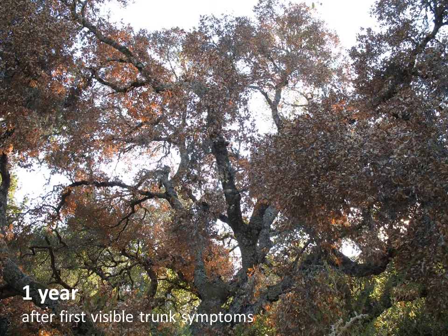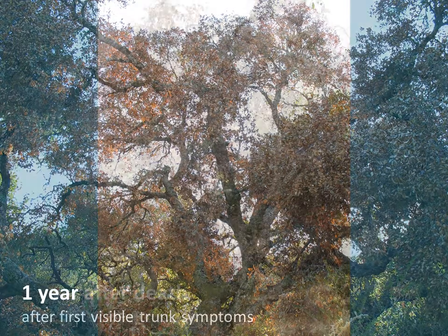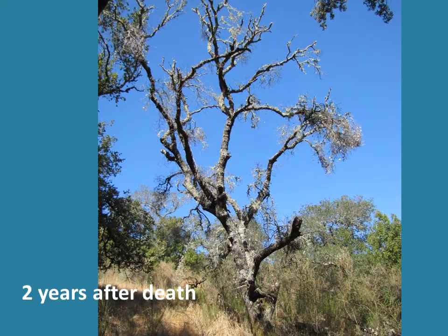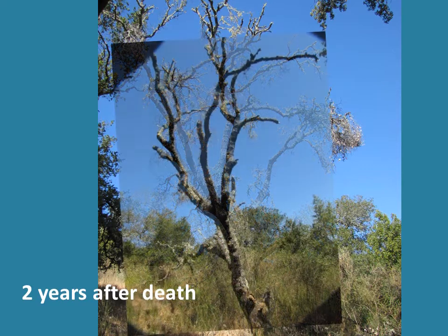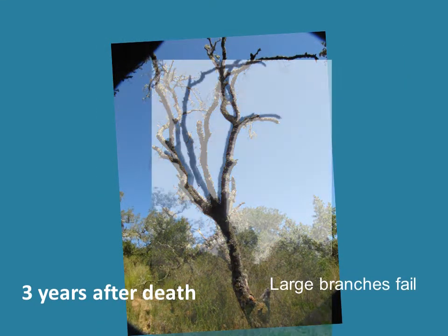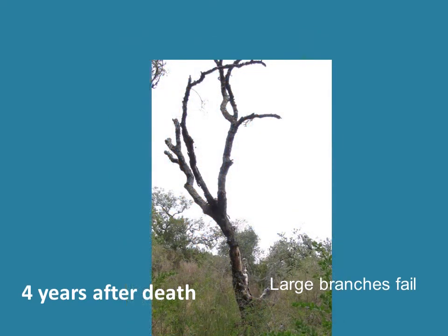A year later, this large tree was dead — a classic example of sudden oak death. As is typical of trees that die suddenly, the dead leaves fall off over the next year or two. Within two years of death, many of the fine branches and some of the larger branches had failed. This pattern of falling apart from the top down is common in large trees with little pre-existing trunk decay.